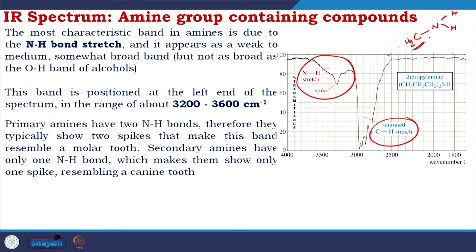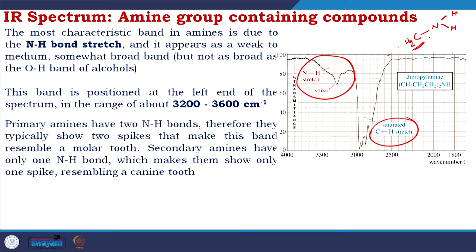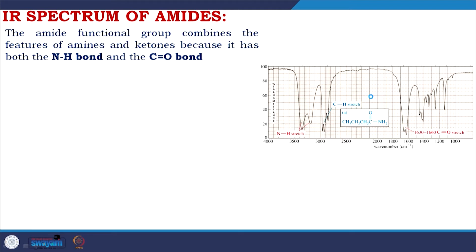Primary amines have two NH bonds and typically show two spikes, resembling a molar tooth. Secondary amines have only one NH bond, showing a single spike resembling a canine tooth. Tertiary amines have no NH bond and therefore this band is absent from the IR spectrum altogether.